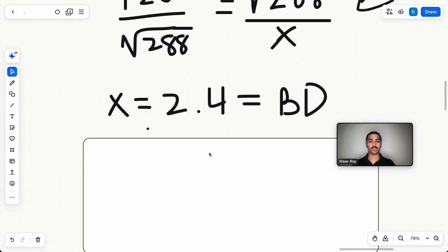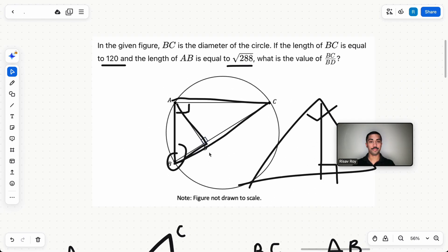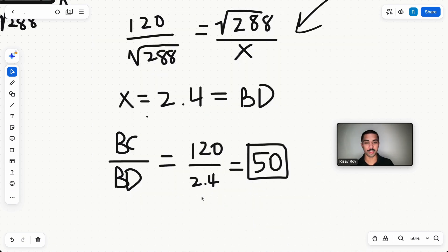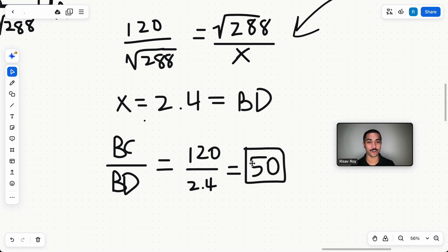Instead of having to read it off the graph, this is going to give you the answer right here. Use it. So X is equal to 2.4, which is equal to BD. That's our answer, right? Wrong. We need the value of BC over BD. We do BC over BD, which is 120 over 2.4, which is equal to 50. 50 is our answer.